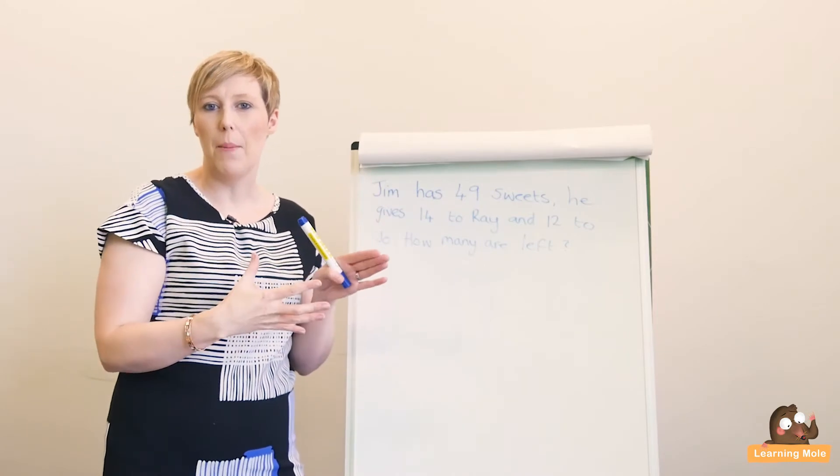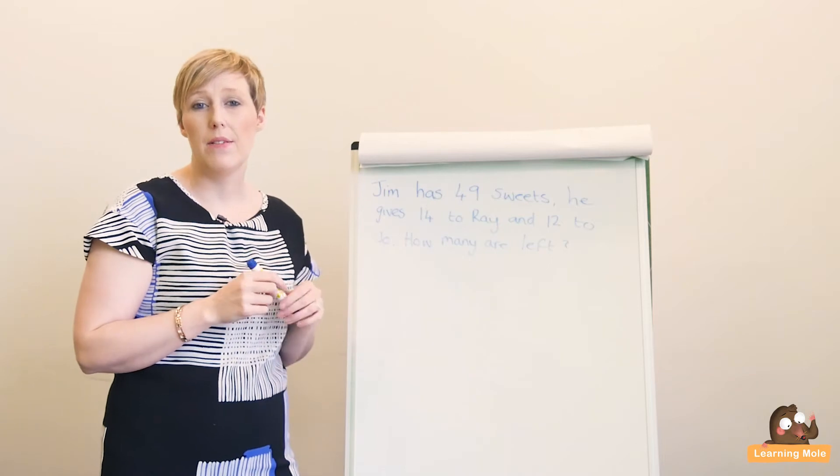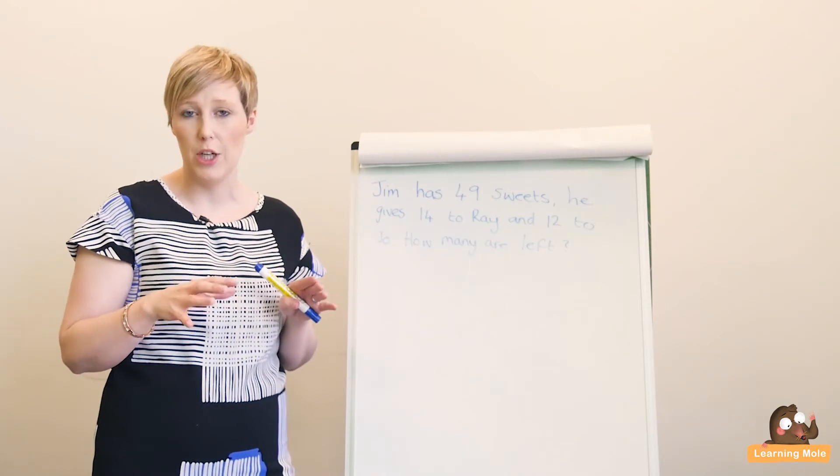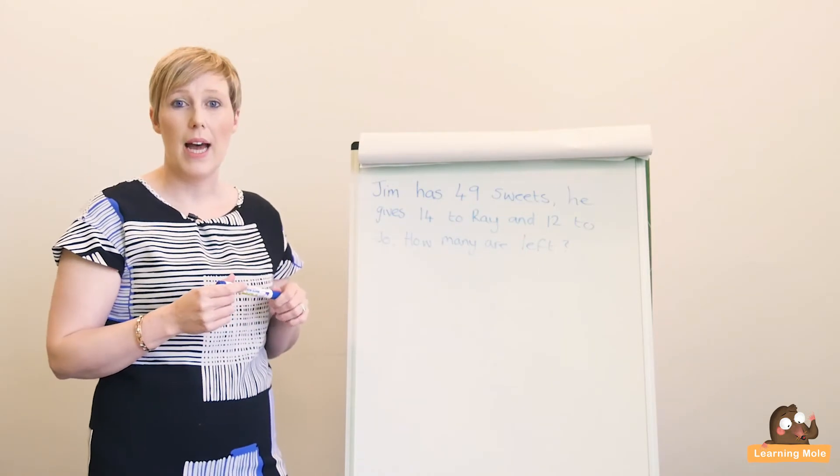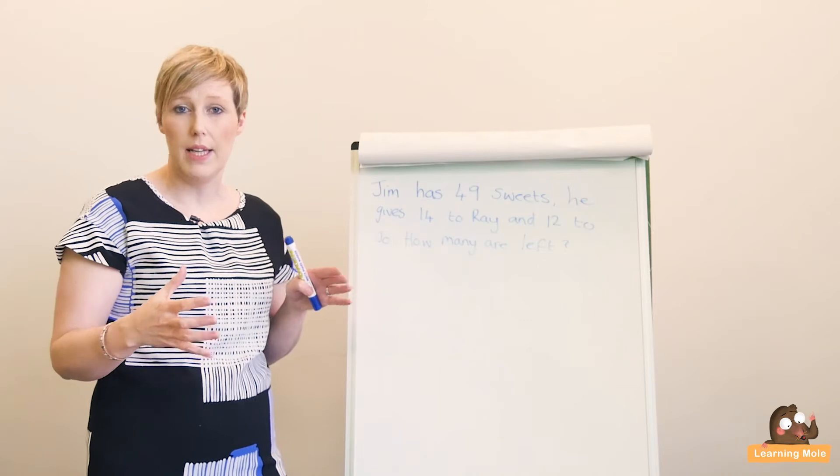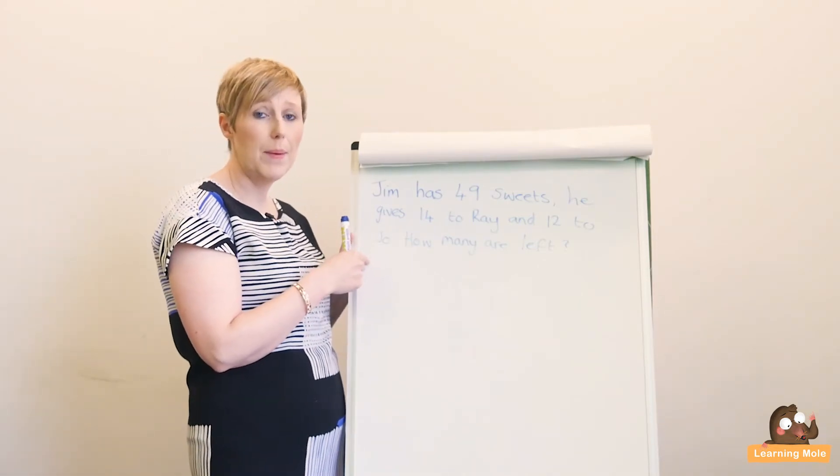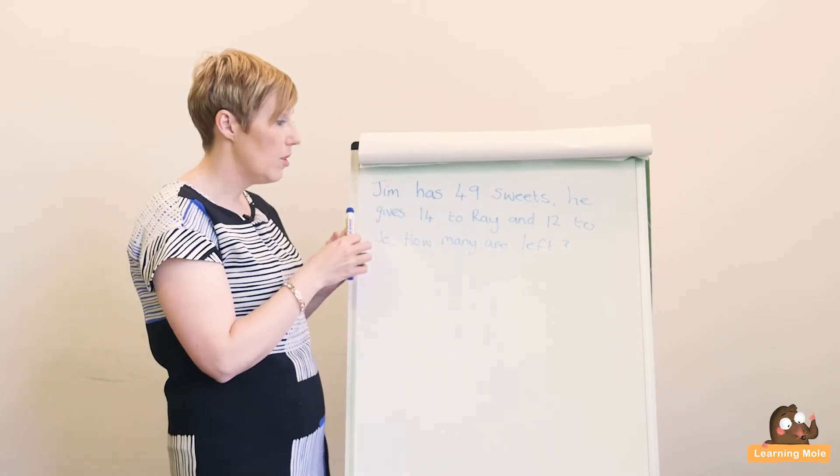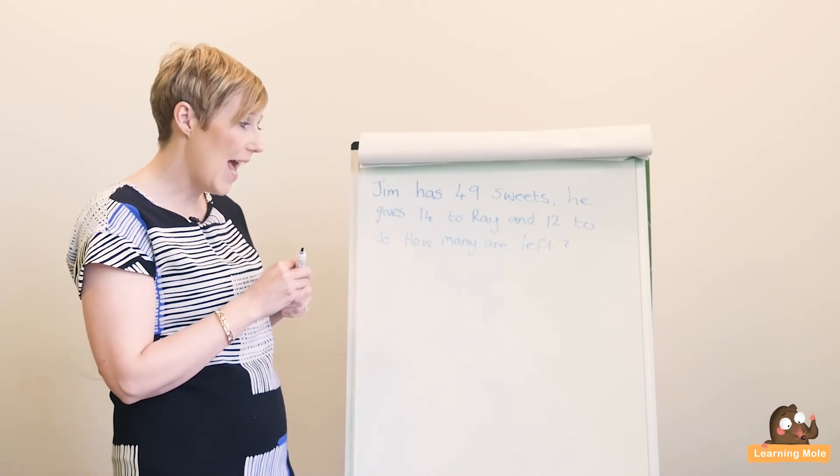Just taking a step back, that's what you're basically aiming for - that more complex idea of solving a problem. This would probably be the lower end of Key Stage 2, so you're talking around the P3/P4/Year 3 sort of level. This again is multi-step, so it has two steps in it. Jim has 49 sweets. He gives 14 to Ray and 12 to Joe. How many are left?